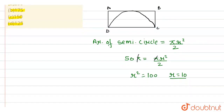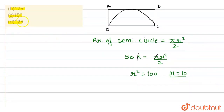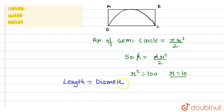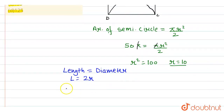So, हमारे rectangle की length हमारे semicircle के diameter के equal है. So, length of rectangle = 2r, और हमारे r की value है 10. So, हमारी length हमें मिली 20.